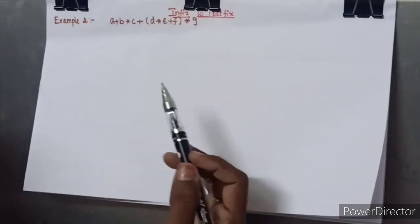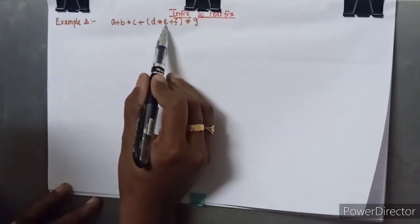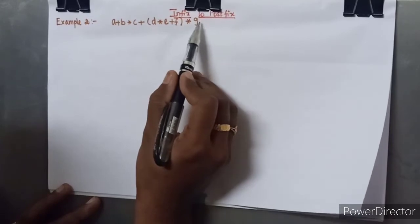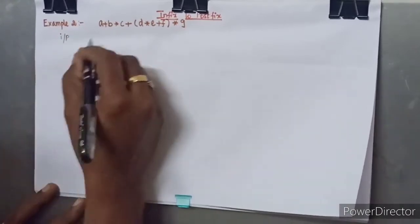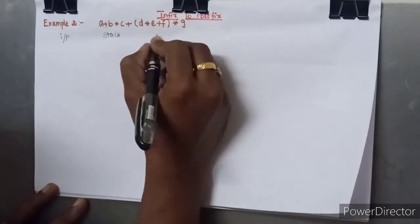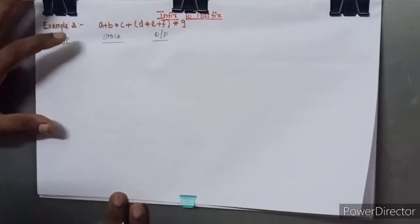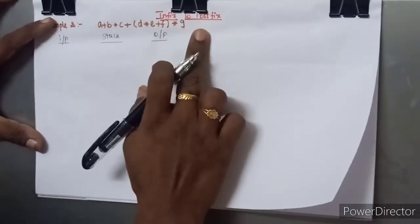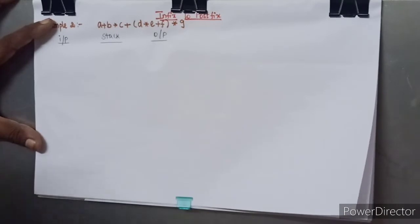In this video, let us continue with the next example for infix to postfix conversion. The given expression is A plus B star C plus D star E, with an open parenthesis, plus F and a close parenthesis, star G. As per our algorithm, we must read the input character, use a stack space and an output space, and start reading the expression from left to right, performing the corresponding operation for each character read.